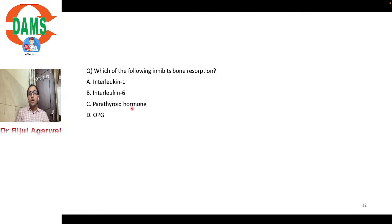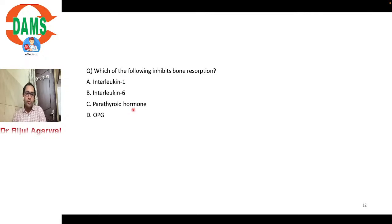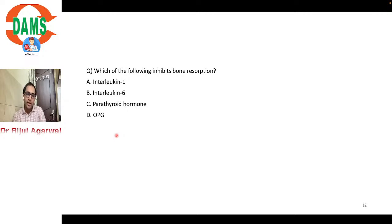Which of the following inhibits bone resorption: Interleukin-1, Interleukin-6, parathyroid hormone, or osteoprotegerin? If you remember the periosteum classes, the answer is clearly osteoprotegerin. All others promote bone resorption. Osteoprotegerin competitively binds with RANKL to inhibit bone resorption.